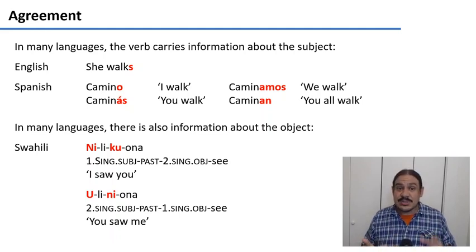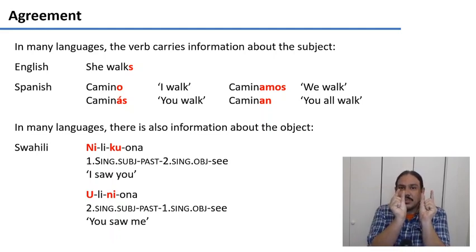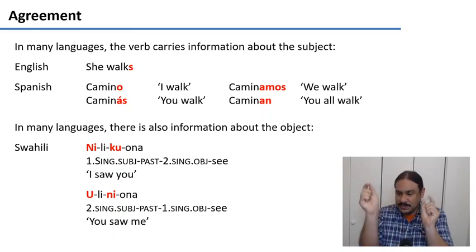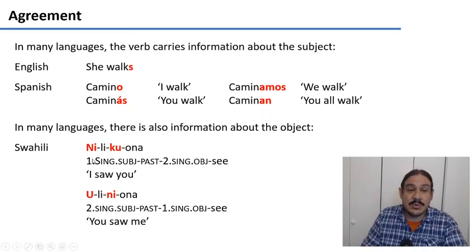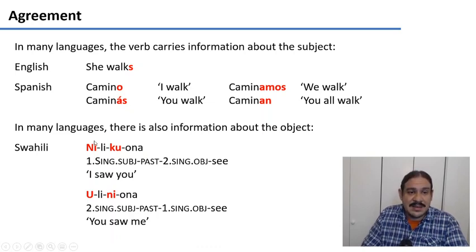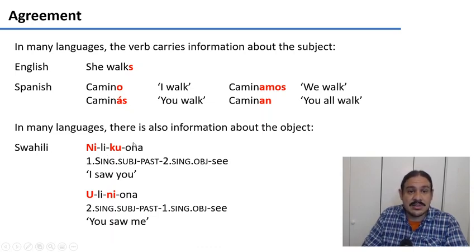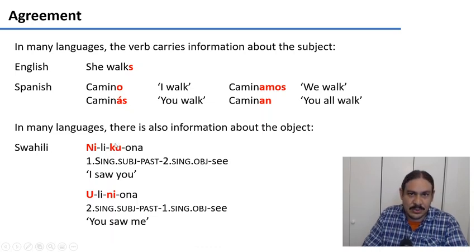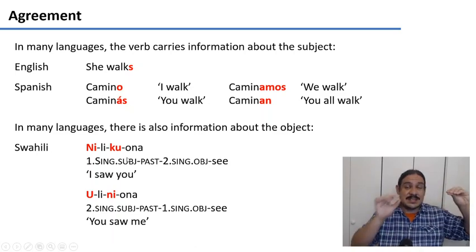In many languages, there's info about the subject but also about the object — about who the action is being done to. In Swahili, for example, we have the word nilikona. 'Ni' tells you that it was I who was seeing. 'Li' tells you that the action is in the past. 'Ona' tells you that it's the verb to see. And 'ku' means that the seeing is happening unto you — that I see you. So nilikona has agreement with both subject and direct object.